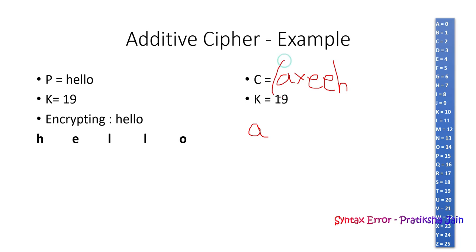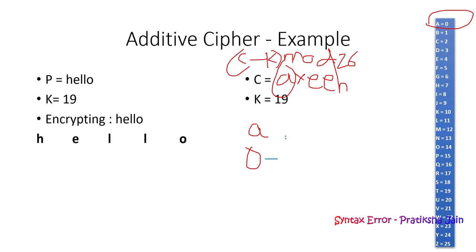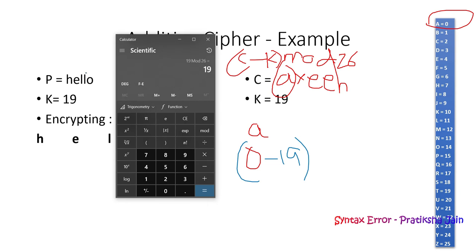Now let us decrypt the first letter of the cipher, which is A. A corresponds to 0. The decryption formula is (c - k) mod 26. So we compute 0 - 19 = -19, then mod 26 — and we get the answer as 7.